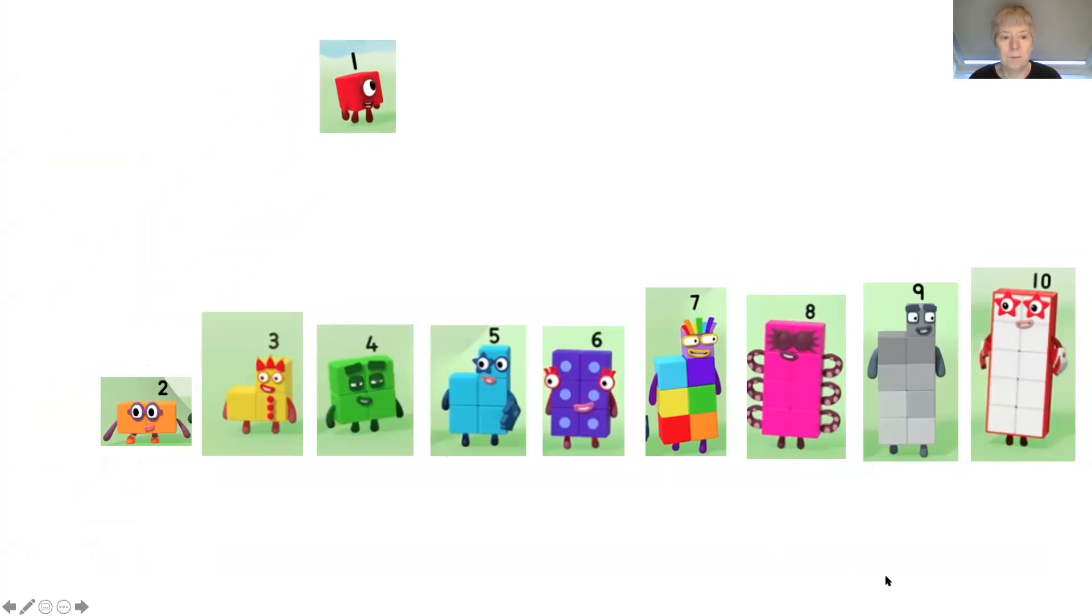Now there was odds and there was evens. Can you remember what was the same about all the number blocks that were odd numbers? And can you remember what was the same about all the number blocks that were even numbers? Have a little think, see if you can tell somebody what you've remembered.